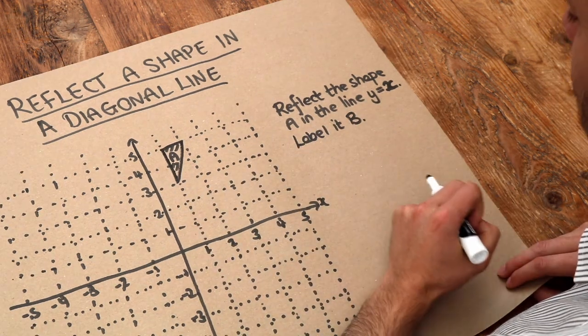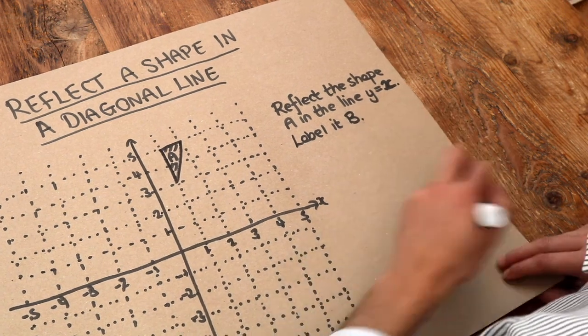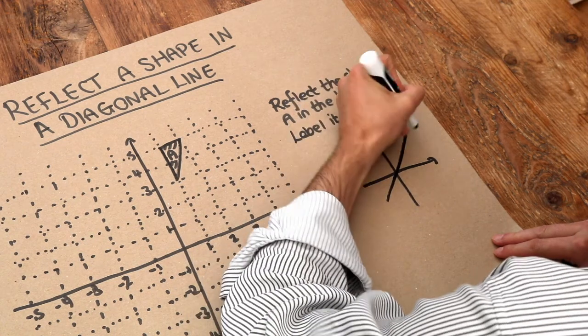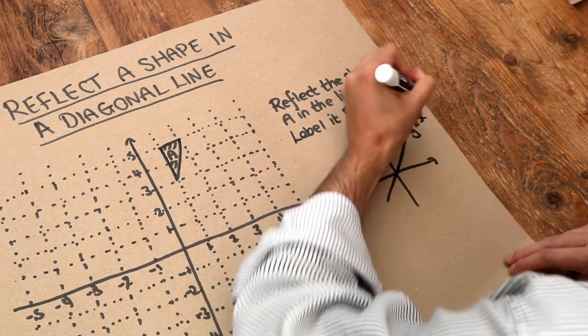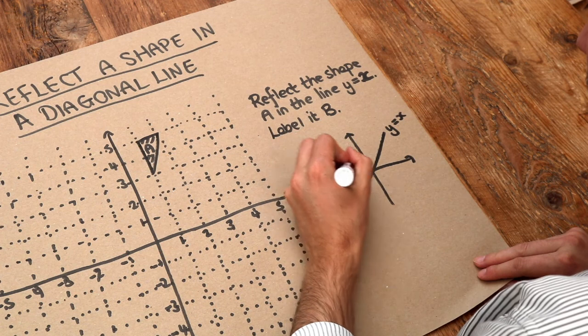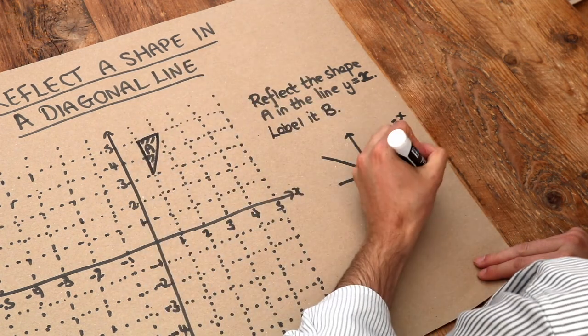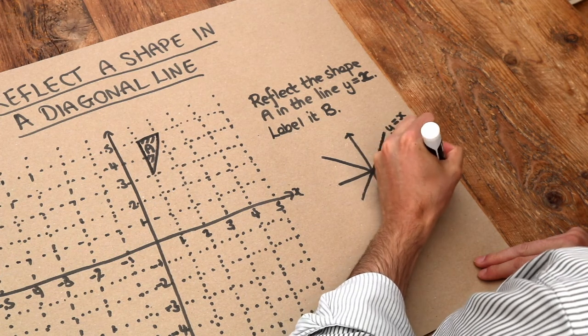If you remember all your stuff about straight line graphs you'll know how to draw this but just to give you a quick summary. This diagonal line has the equation y equals x and this line going from northwest to southeast has the equation y equals minus x.